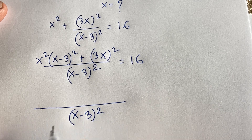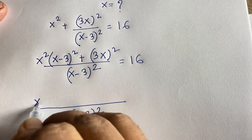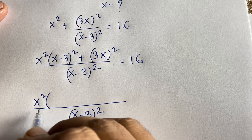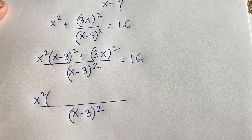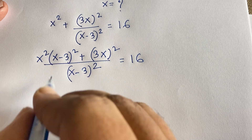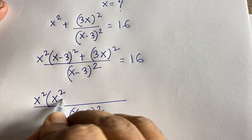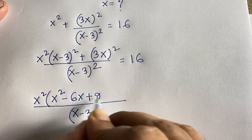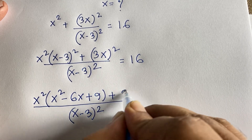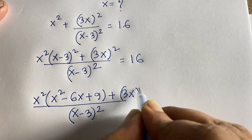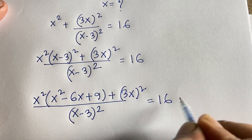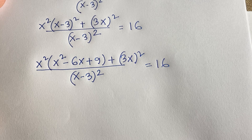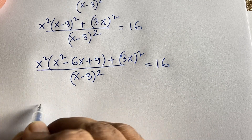Now, x² times (x-3)² — we expand (x-3)² using the identity (a-b)² = a²-2ab+b². So (x-3)² = x² - 2·3·x + 9, which is x² - 6x + 9. Then we have plus (3x)².